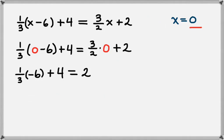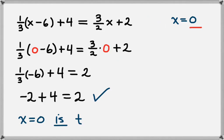On the left-hand side, again, we have 1 third times negative 6, which gives us a negative 2, plus 4, and that's supposed to equal 2. And in fact, negative 2 plus 4 does equal 2. And so x equals 0 is the solution to this equation.